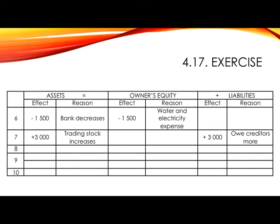Number 8. Owner drew a cheque in favour of Telcom to pay his personal telephone account, 800 Rand. Even though the amount has been paid to Telcom, and you might want to regard this as a telephone expense, because it is for the owner's personal telephone account, we need to treat this as drawings. The other account is obviously bank. In assets, show minus 800 as bank decreases. In owner's equity, minus 800 because it's drawings — the owner has reduced his investment in the business, so equity has decreased.